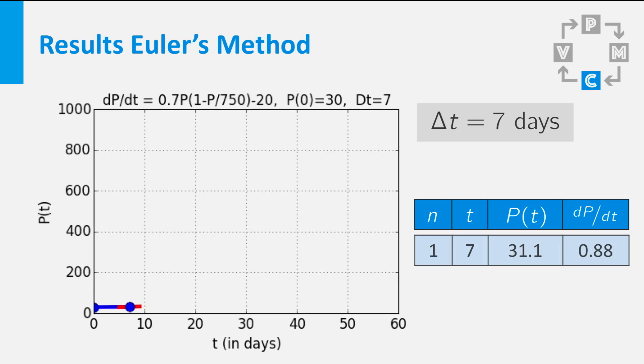And then we calculate the derivative at t equal to 0 by substituting P equals 31.1 in the formula for the derivative. Now the derivative is 0.88 per day.